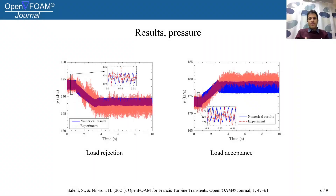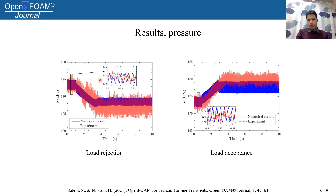Here the pressure in the vaneless space of the turbine is shown for both load rejection and load acceptance procedures. One can see the pressure distribution is captured rather accurately compared to the experimental data, and we have clearly captured the rotor-stator interaction fluctuations in the pressure.